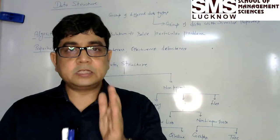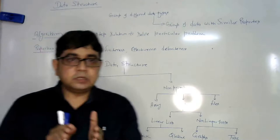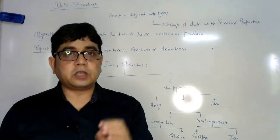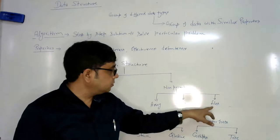Data structure can be of two types. One is the primitive, another one is the non-primitive. Primitive data structure means inbuilt data types available. That is integer, float, character and pointer. These are inbuilt data types available. And non-primitive data structure means array, list and files.